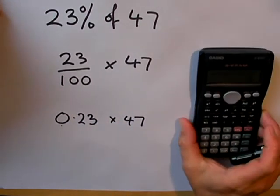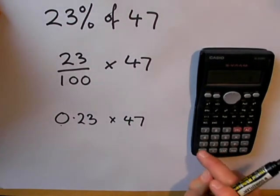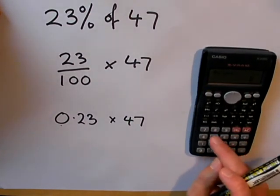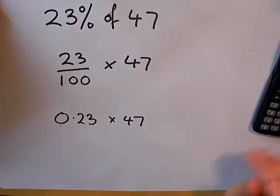Both ways, we can use our calculator to work this out. 0.23 times 47 gives us the answer, 10.81.